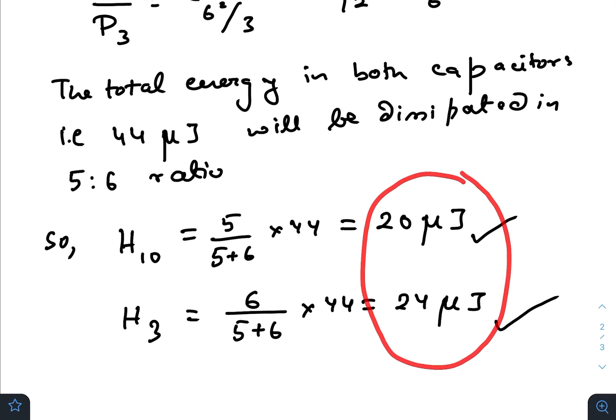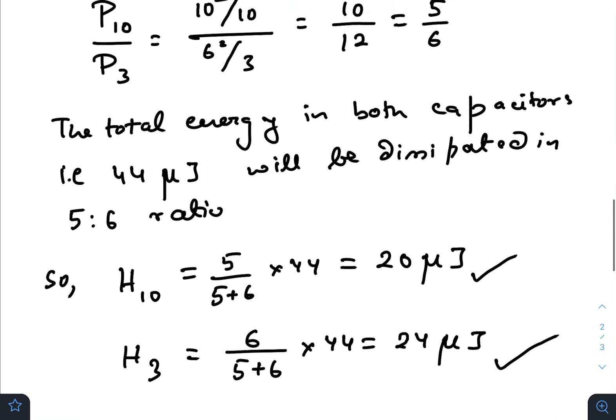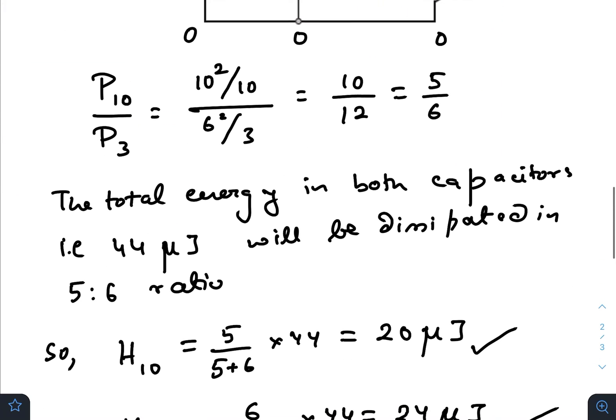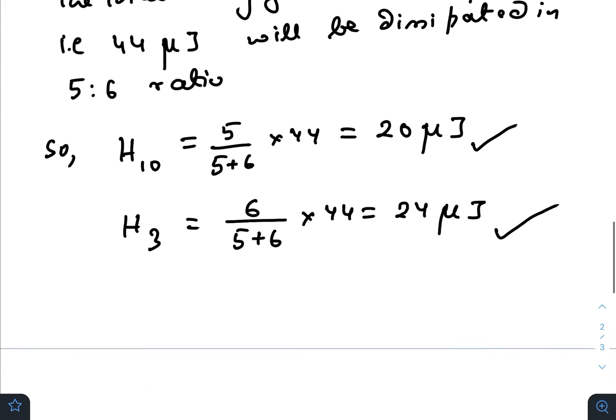As you can see, the total sum is 44 microjoules, which was the total energy stored by the two capacitors. I hope you all have found this video helpful and informative. If you like the video please give a thumbs up. If you are new to this channel please do subscribe, and I will see you in the next one. Peace.